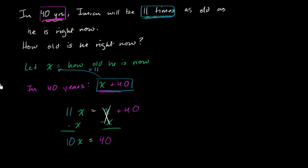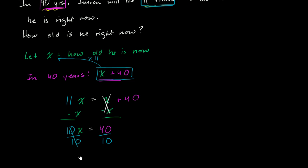You could do this in your head at this point, but let's solve it formally. To get a coefficient of one, divide both sides by 10. And with a drum roll, we get x equals 4 years old.